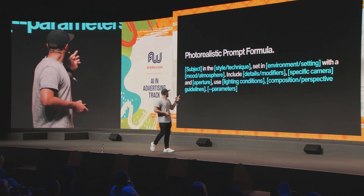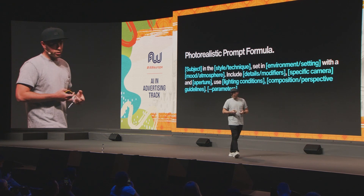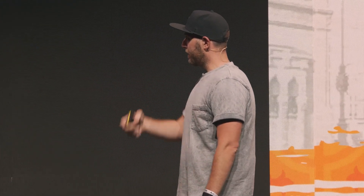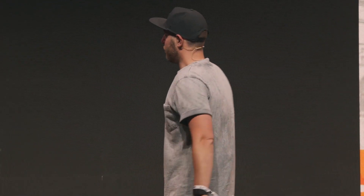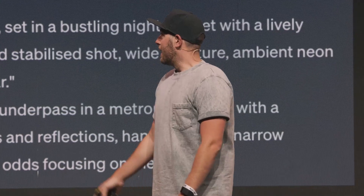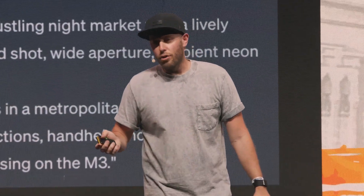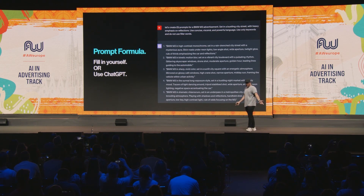Here's a photorealistic prompt formula. We take the elements we utilized in the last couple of images and put them into a prompt formula. We just took everything, put it into a condensed paragraph, separated by commas, and we have a prompt formula. If you're not comfortable with the terms — like, I didn't know what an aperture was until I started doing this — you can either fill those prompt formulas in yourself, or you can use ChatGPT.